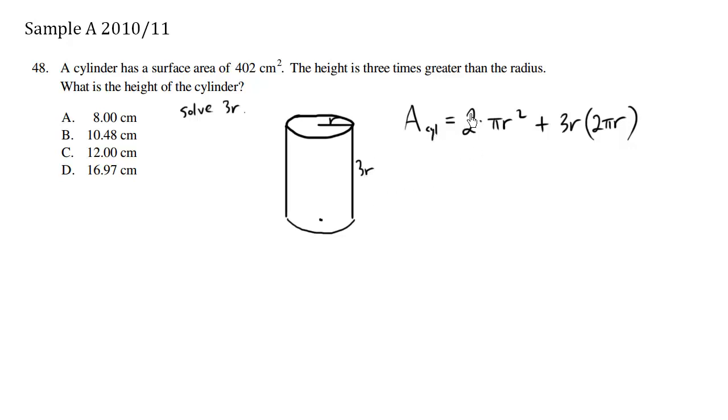So we can solve for this because we're given the surface area as 402. So 402 is equal to 2pi r squared plus 6pi r squared. I'm just distributing here. So we have 402 is equal to 8pi r squared. So r squared is equal to 402 divided by 8pi.